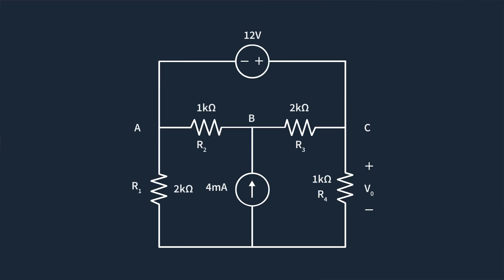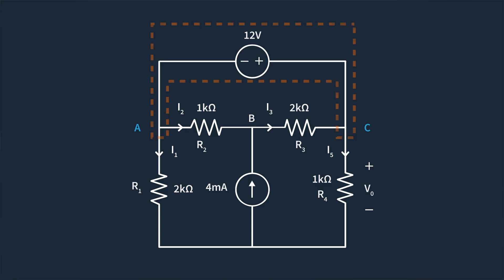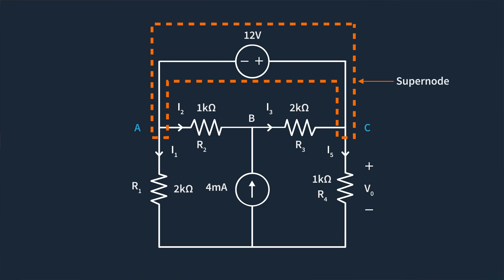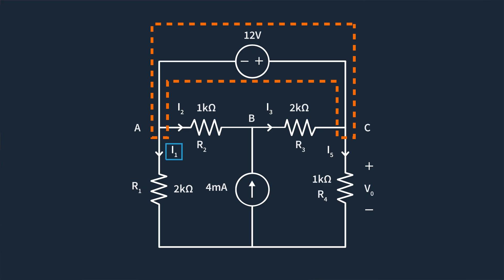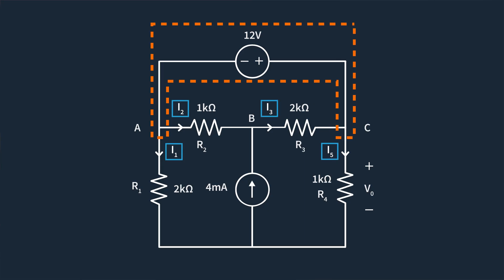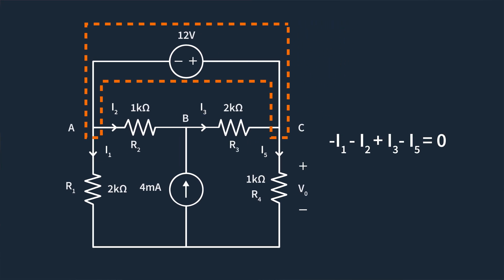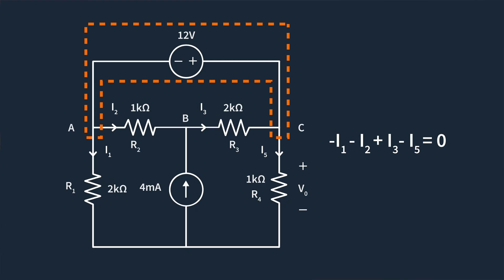Let's use another circuit as a simple example to understand the process of applying KCL to a nodal analysis circuit with a supernode. We have a circuit with a 12-volt voltage source between two nodes and multiple resistors connected to each. Instead of analyzing the two nodes separately — the node above R1 and above R4 — we wrap a big circle around them and treat them as a supernode. At the supernode, we will have I1, I2, and I5 leaving the supernode with I3 going into the supernode.